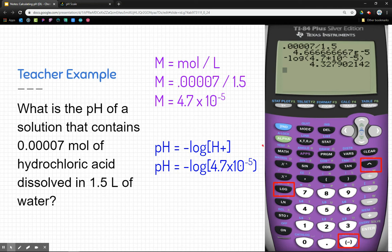And so those are the buttons that I would need to use. Once I push enter, I'm going to get my answer, which is 4.3. And so the pH is 4.3. This is definitely an acidic solution because it's below 7.